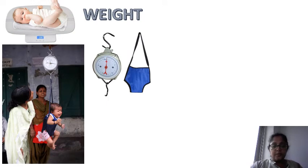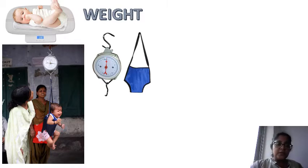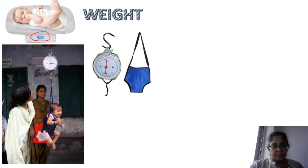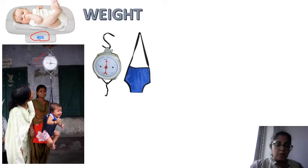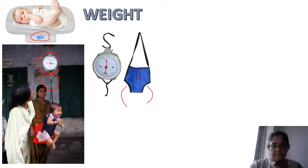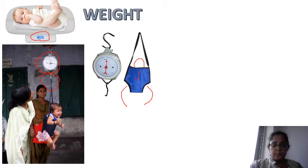Weight measurement is mainly recorded in kilograms in India and pounds abroad. Basically, these are all spring balances. The infant is placed on the weight scale. This particular weight scale is known as the Salter weight scale, mainly used in ICDS centers. It is a spring balance with an analog clock display, and a bag-like seat where the child sits with two legs coming out.